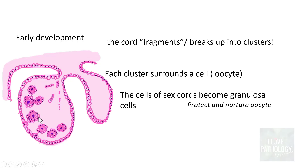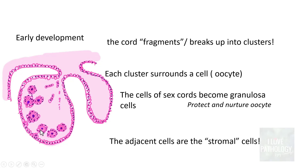What are stromal cells? In between these clusters of sex cords are the stromal component. Some of these stromal components differentiate into another type called theca cells, and there are also fibroblasts. So the adjacent cells are the stromal cells. The tumours we are discussing - sex cord stromal tumours - are derived from granulosa cells (sex cord) and stromal cells, which include fibroblasts and theca cells.